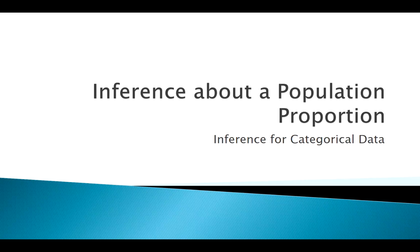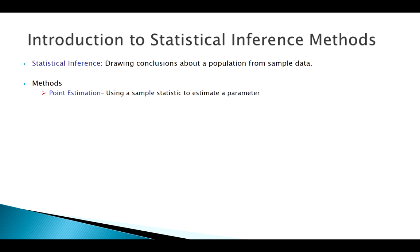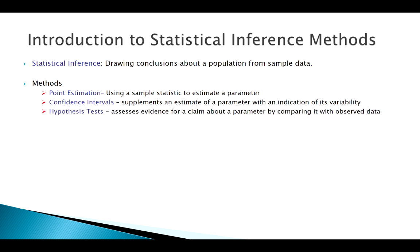Welcome back. Today we're going to be talking about applying inference methods to categorical data, specifically when our population proportion is our parameter of interest. We're using these ideas of inference — using a sample to figure something out about the population it came from. Point estimation is the easiest way of doing this; confidence intervals build off those point estimates, and then hypothesis tests — that's where we say we think we know what the value of this parameter is and ask whether our data supports or refutes that.